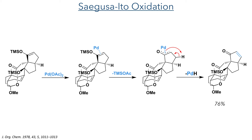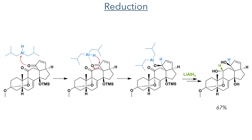With this alkene now installed, the authors could reduce both carbonyl groups present in the molecule. The first was reduced with DIBAL-H, which coordinates to the carbonyl oxygen allowing the hydride to add as a nucleophile, which upon hydrolysis forms a hydroxyl group. This was not isolated and instead both reductions were carried out in one pot. As the carbonyl group on the six-membered ring was much more stable, the authors needed to use lithium aluminium hydride to reduce it, which is a stronger reducing agent but reacts in a similar manner to DIBAL.